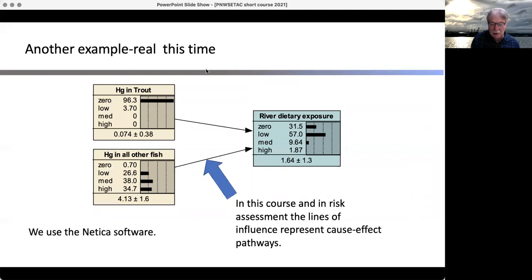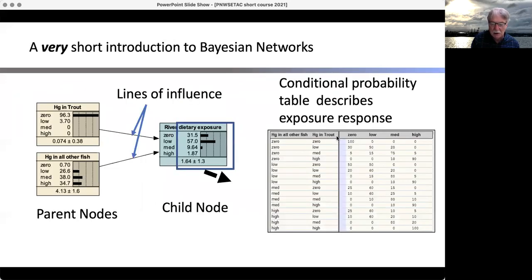The example this time is a real one from our South River work. We're trying to look at river dietary exposure to humans. You can see mercury in trout, mercury and other fish. Some like smallmouth bass have very high concentrations of mercury, others are very low. Then we calculate what the river dietary exposure was. Here's a line of influence, the parent nodes, and here's our conditional probability table. That's basically what we're doing for all the kinds of calculations that you'll see later.